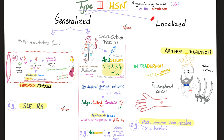Type 3 can be generalized or localized. Fibrinoid necrosis happens with lupus, rheumatoid arthritis, and adult-onset Still's disease — not the doctor's fault. The serum sickness reaction is the doctor's fault — the doctor gave you anti-serum containing antibodies from another organism; your body developed antibodies against those antibodies. You get urticaria, arthralgia, proteinuria, and fever one to two weeks later. The localized form is the Arthus reaction — a post-vaccine skin reaction.